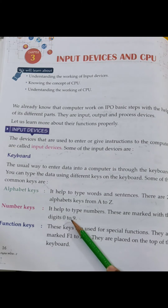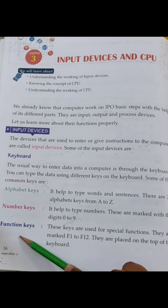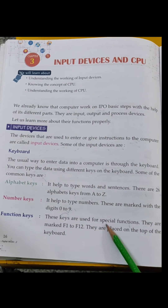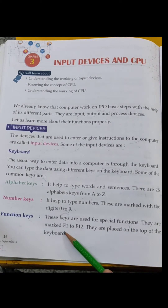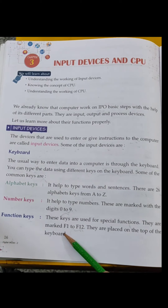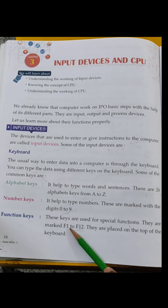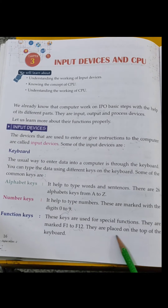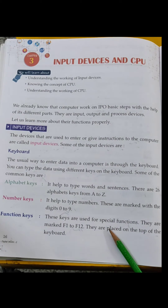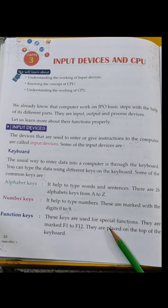Next is Function keys. These keys are used for special functions. Special functions के लिए use किया जाता है. They are marked F1 to F12 — कहां से कहां तक? F1 to F12. आपने keyboard में देखा होगा जब practical किया है. They are placed on the top of the keyboard — keyboard के top पे.